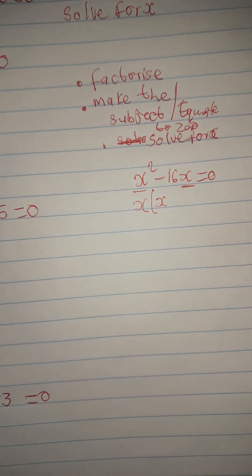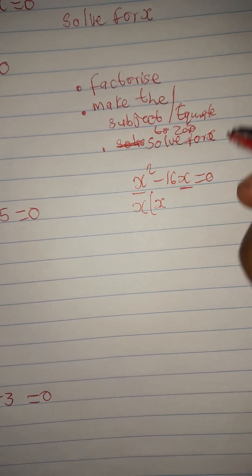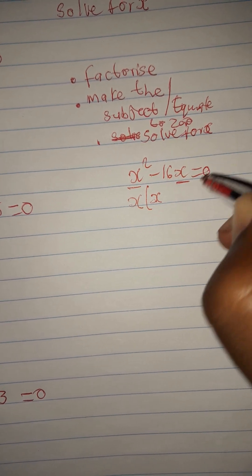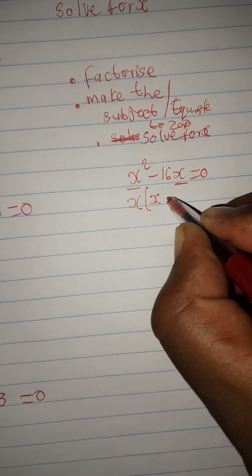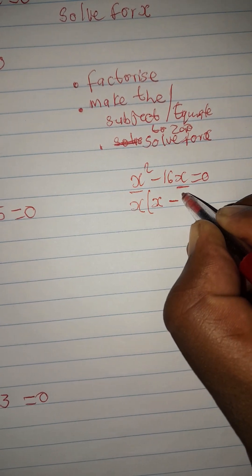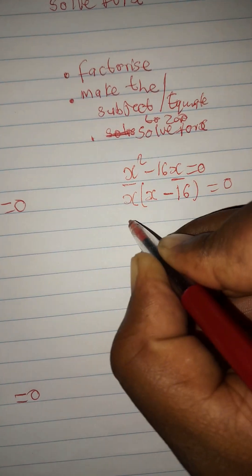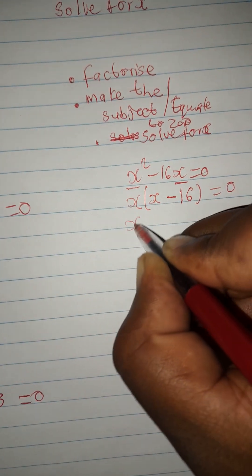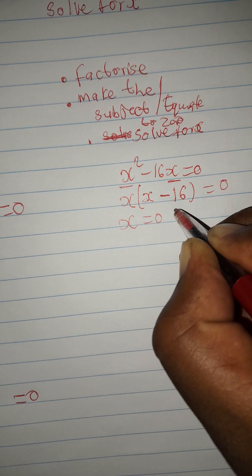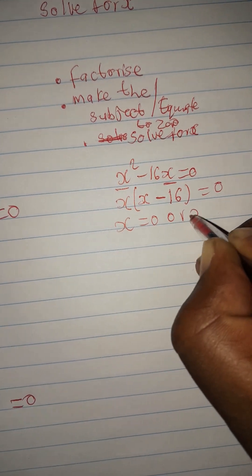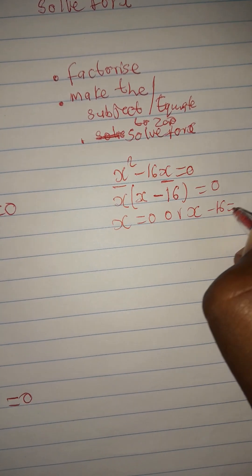Remember, x times x is x squared, and x plus x is 2x — those are like terms. So we have x times (x minus 16) equated to zero. Then you equate everything to zero: x equals zero, or x minus 16 equated to zero.